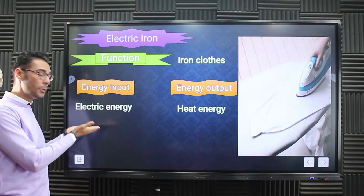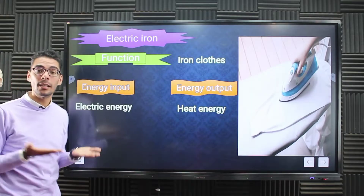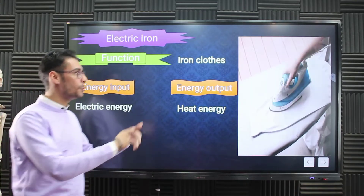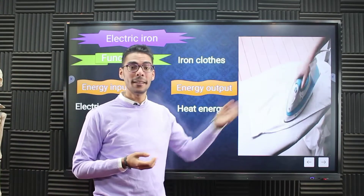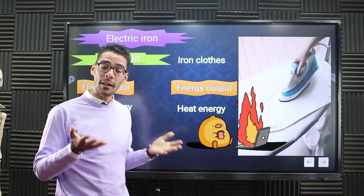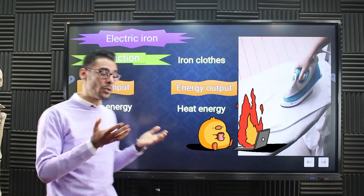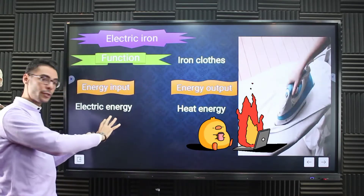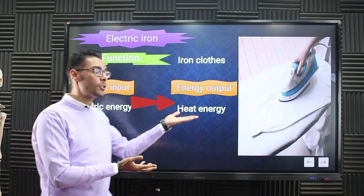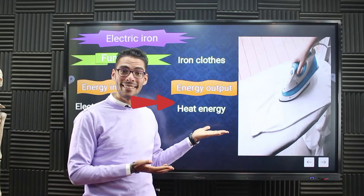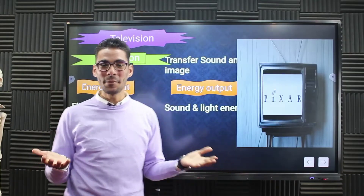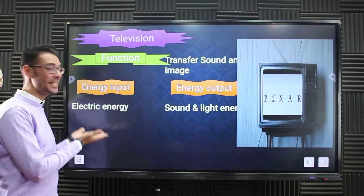The next one is the electric iron. This is also an electric device, so the input energy is electric energy. The produced output from the electric iron is heat. The electric iron is used to convert electric energy into heat energy.